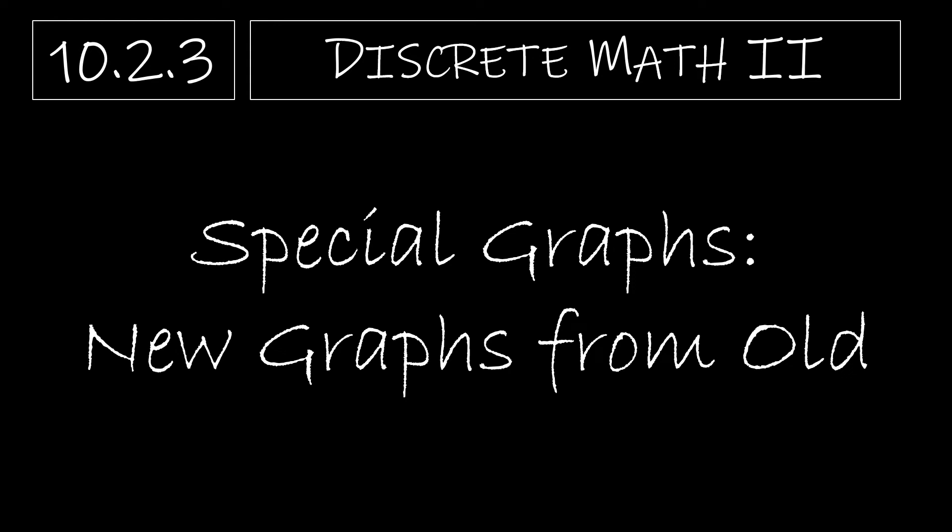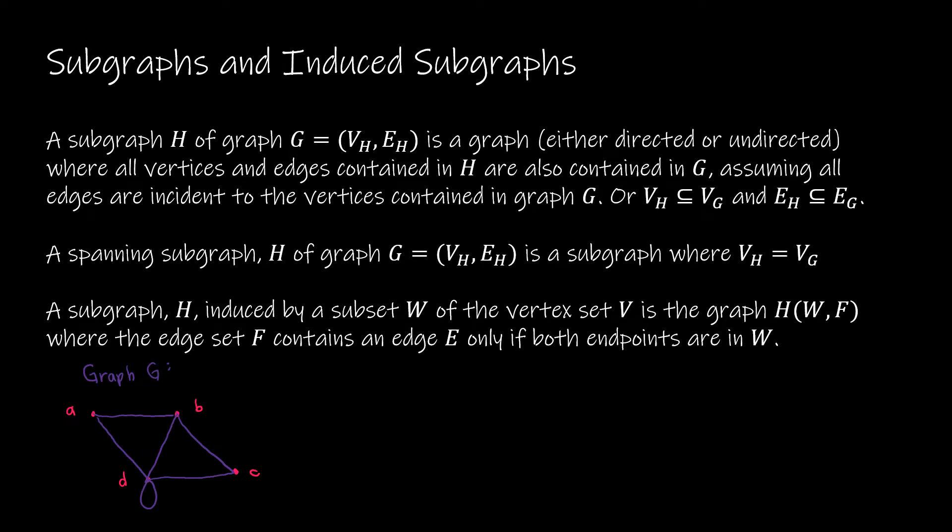Let's finish up section 10.2 now by looking at special graphs that occur when we create new graphs from old graphs. So first, let's talk about subgraphs because we haven't talked about that yet. If we have a subgraph H of a graph G, it's a graph, either directed or undirected, where all the vertices and edges in the subgraph are also contained in the original graph. So we can't add any edges. We can't add any vertices. Everything is contained in the original graph.